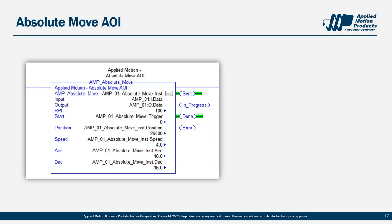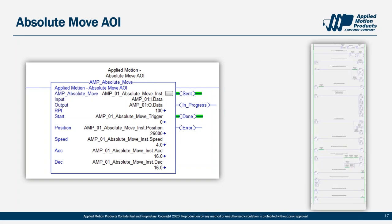Once the start bit is pulled, the AOI performs math to scale the variables correctly, states that stuff the output assembly with the scaled variables, and logic that sets and holds the output assembly for the correct amount of time — along with some error checking. It takes 13 rungs of ladder to set up, send, and verify the move, and we've extracted all of that into a single start bit trigger.